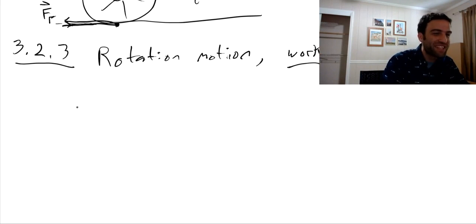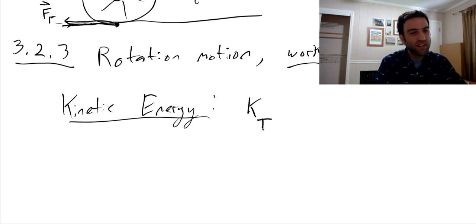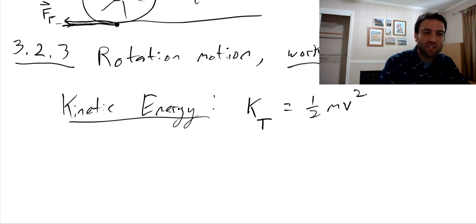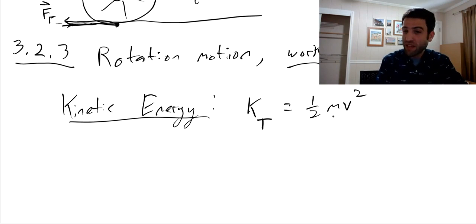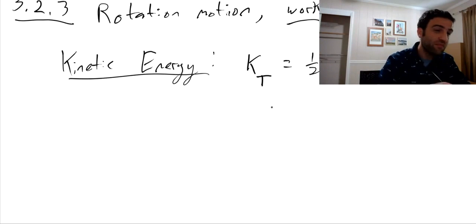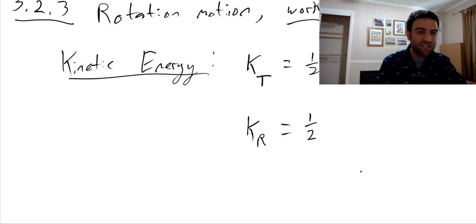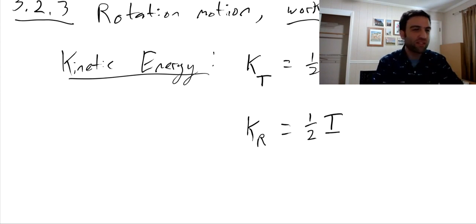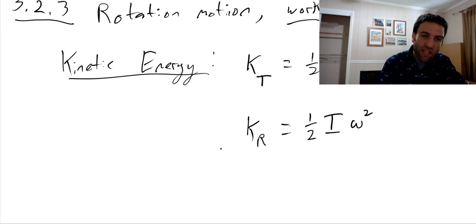For translational kinetic energy K_T, we had one-half times mass times velocity squared. For rotational motion, the equation looks just the same: the kinetic energy due to rotation is one-half times I — the angular mass, or moment of inertia — times omega squared, where omega is the angular velocity. This is exactly the right expression for how much rotational kinetic energy an object has.